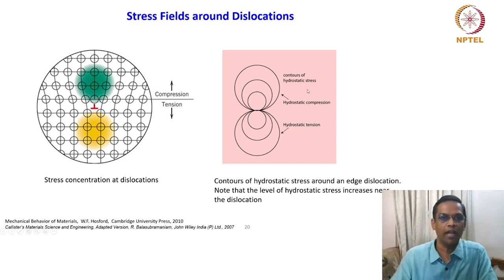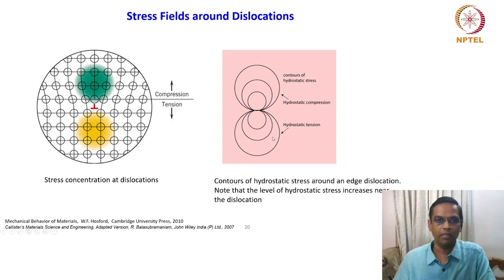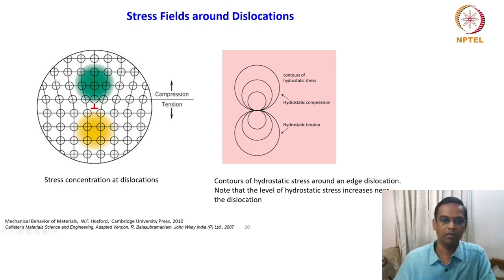You know the meaning of hydrostatic stress now, because we have enough background for that. The above one is hydrostatic compression and the bottom one is hydrostatic tension. We will now see how complicated it becomes when it comes to the edge dislocation stress fields as compared to screw dislocation.